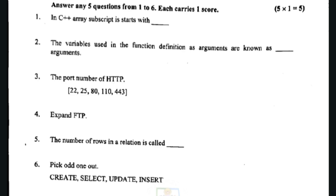Next question: pick the odd one out from Create, Select, Update, Insert. Create will be selected as the odd one out because it is a DDL function. Create is a DDL function.